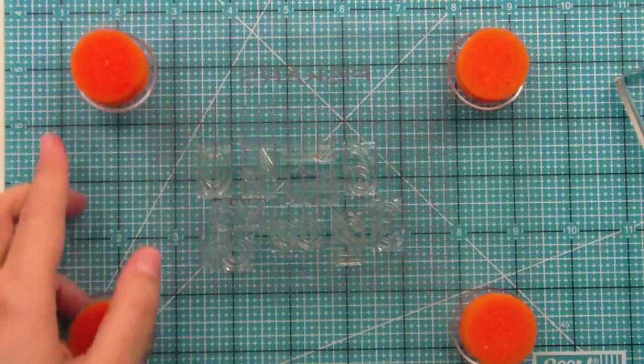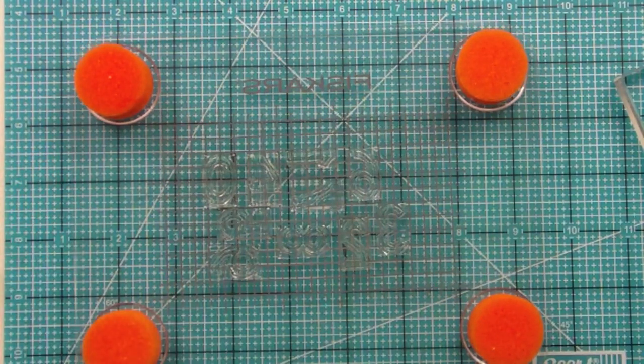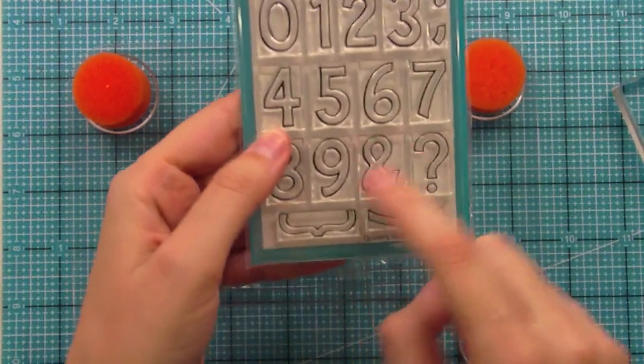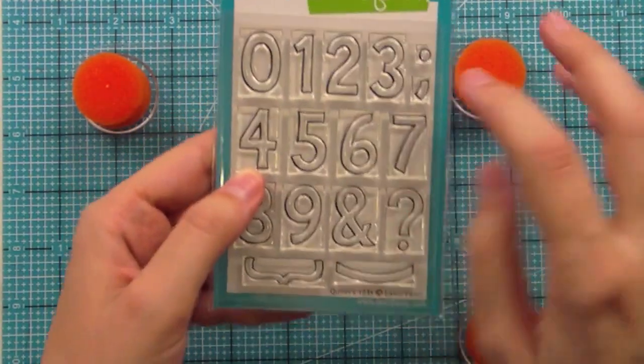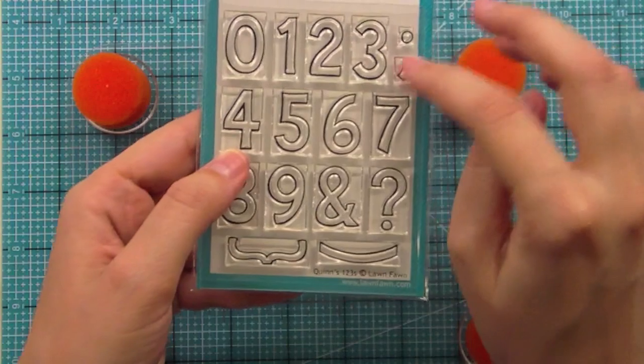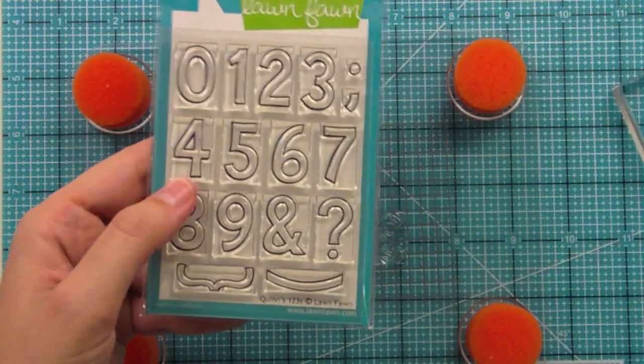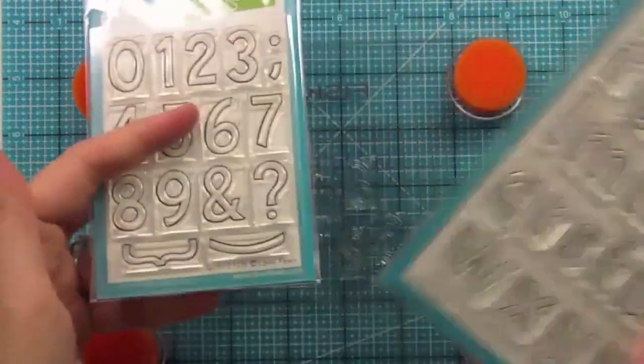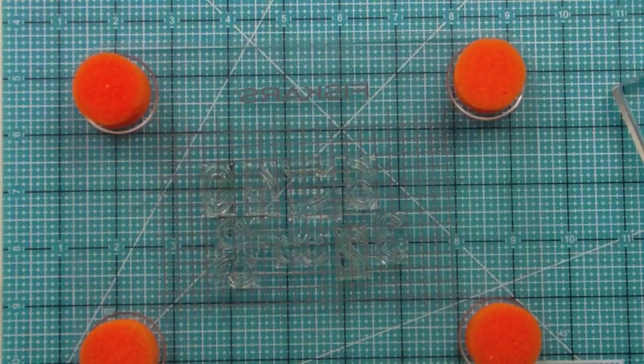Okay so now I have this fun background all laid out and we're going to go ahead and stamp that out. But first I just wanted to show you in this set also are some fun punctuation. We've got the bracket and parentheses, the ampersand, and you know, semicolon, period, comma, and the question mark which goes perfectly with the exclamation point that's already included in Quinn's ABCs. So it's definitely really fun to put them together.